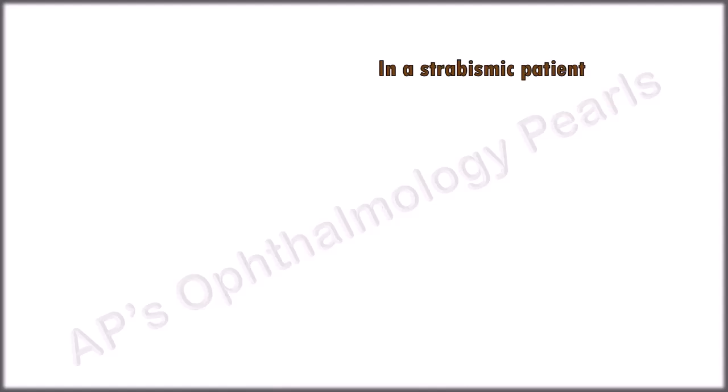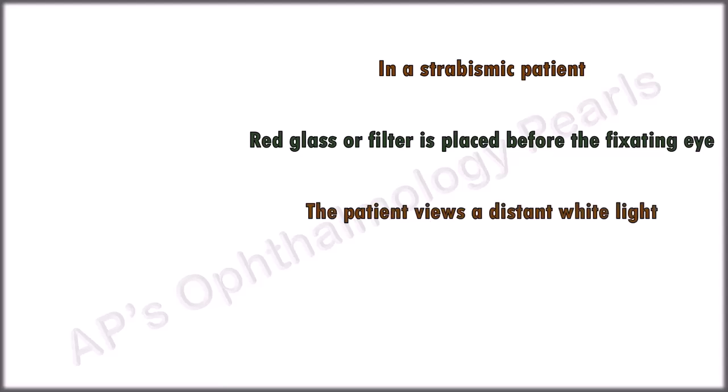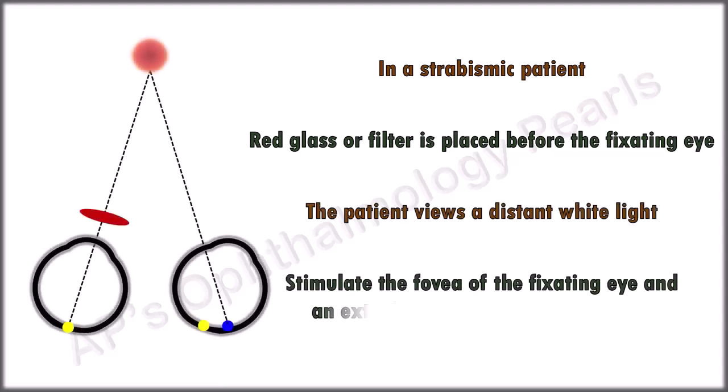Now for the test. In a strabismic patient, a red glass is placed before the fixing eye. The patient views a distant white light to stimulate the fovea of the fixating eye and an extra foveal area of the fellow eye. In all of the following examples, the left eye is the fixing eye and so the red glass will be placed in front of the left eye.